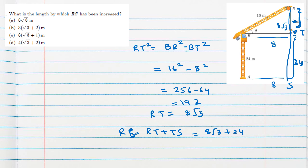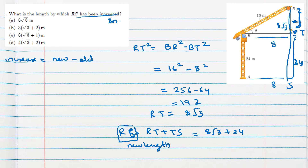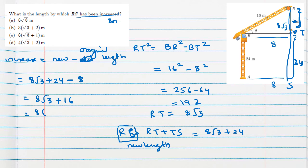The new length of RS is 8 root 3 plus 24, and the original RS length was 8 meters. The increase in length equals new length minus original length: (8 root 3 + 24) minus 8 equals 8 root 3 + 16. Taking 8 as common factor gives 8(root 3 + 2). Option B is the correct answer.